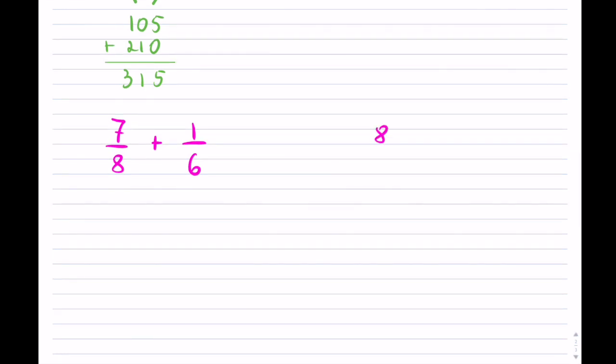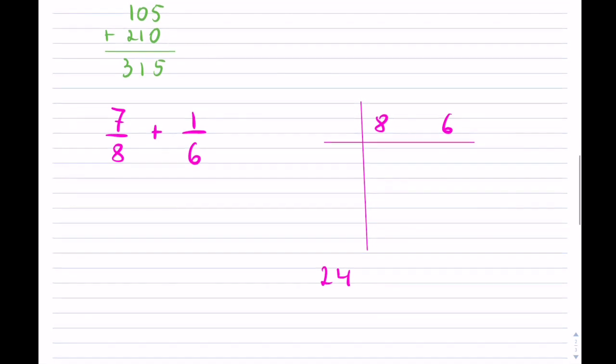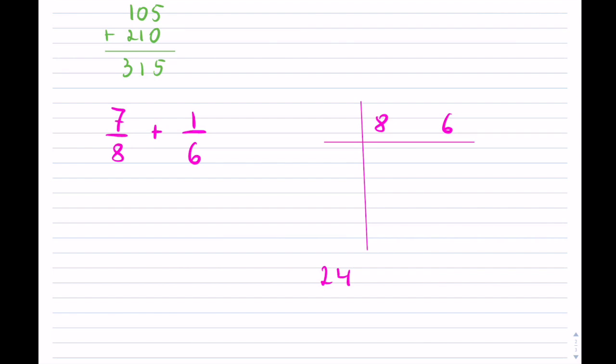So you can write your table and prime factorize these. Or, of course, you can guess. So if you like, you can guess and see. So the lowest common denominator actually will be 24. So how do I know that? I'll show you anyways. And for those not interested, you can forward the video.